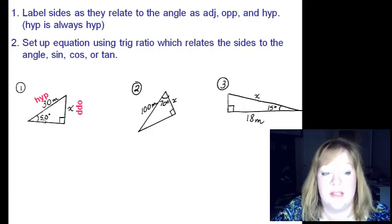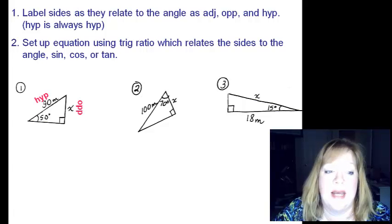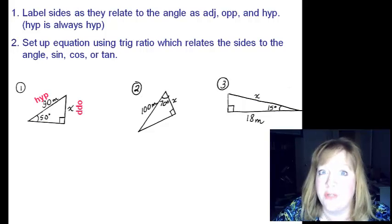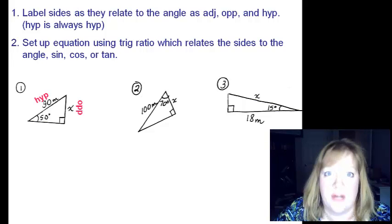If I look, this is fifty degrees, across the way is x, so I have opposite and hypotenuse. So you have to say which trig ratio is that, is that sine, cosine, or tangent?